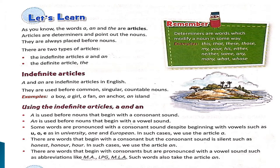For example: an apple, an elephant, an orange. Now, let us take the word 'honest'. We pronounce the word 'honest' — here the alphabet H is silent, and we pronounce it with the O sound. So, we use 'an honest'.